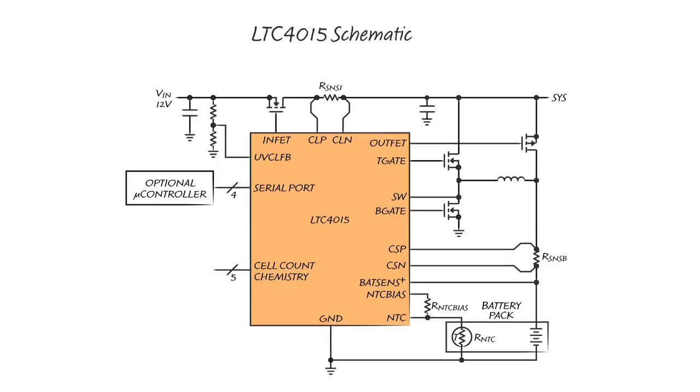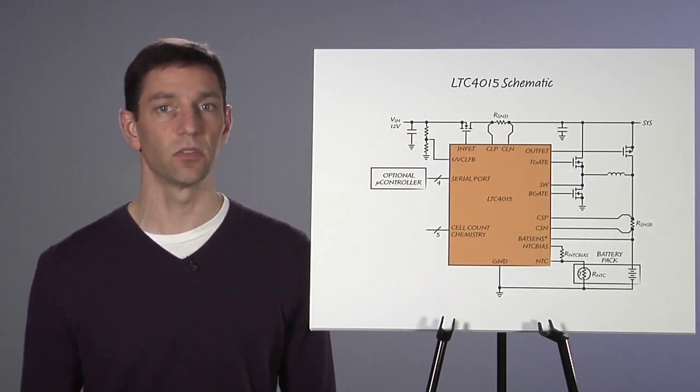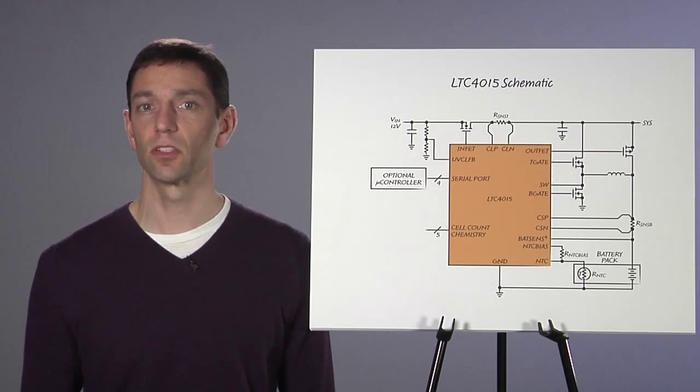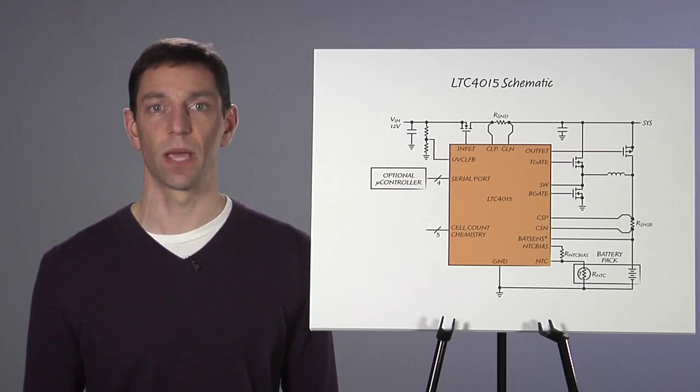Nine different charge algorithms can be selected to charge lithium ion, lithium iron phosphate, or lead acid batteries. For lithium chemistries, the LTC4015 can charge up to nine series cells. The device can also charge 6-volt, 12-volt, and 24-volt lead acid batteries.